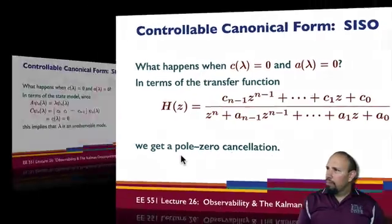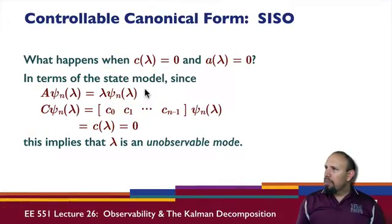In terms of the state model, what's happening? Well, we know A times C(lambda) is equal to lambda times C(lambda), and C times C(lambda) is in fact c evaluated at lambda, which is zero.